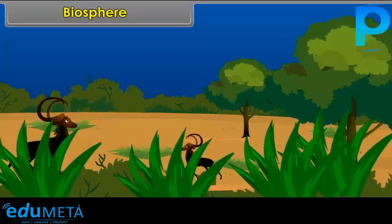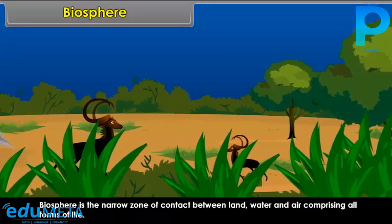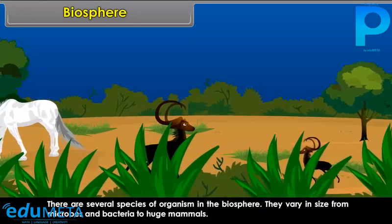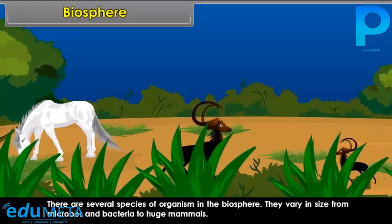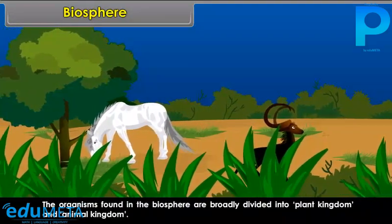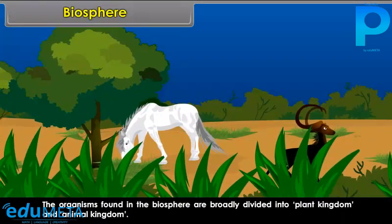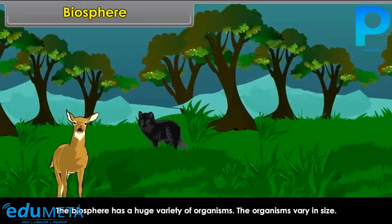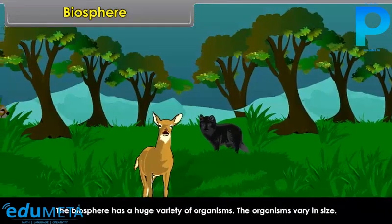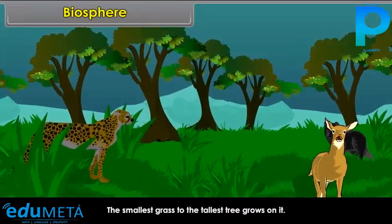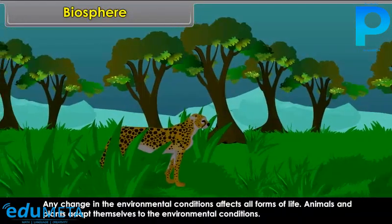Biosphere is the narrow zone of contact between land, water, and air comprising all forms of life. There are several species of organisms in the biosphere, varying in size from microbes and bacteria to huge mammals. The organisms found in the biosphere are broadly divided into the plant kingdom and the animal kingdom. The four realms of the earth interact with each other and affect one another. The biosphere has a huge variety of organisms, from the smallest grass to the tallest tree.